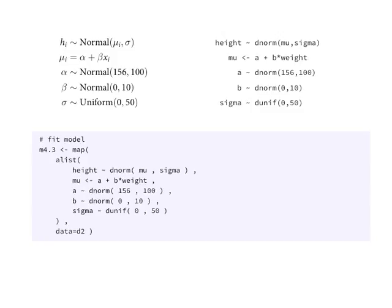For most of the course, there'll just be sigma — inert and boring, not conditional on anything. The definition of how mu_i is conditional on individual i is in the second line — the linear model part: a line with intercept alpha and slope beta, where x_i is the weight of individual i. We define priors: a broad, effectively flat prior on alpha, and a slightly conservative prior on beta centered on zero, because zero means no effect. This is still a pretty silly prior — you can easily do better, because you know the relationship between height and weight is positive prior to seeing the data.